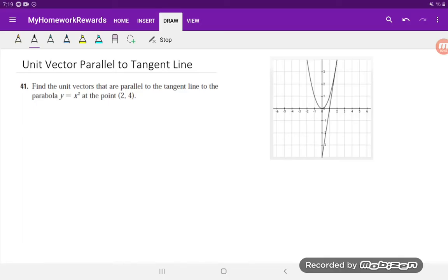So first, let's solve for the slope of the tangent line at x equals 2. So recall that we can find the slope by finding the derivative dy by dx, and the derivative for y equals x squared is 2x. You bring the 2 down, and you subtract 1 from the exponent on x. And now at the specific point,